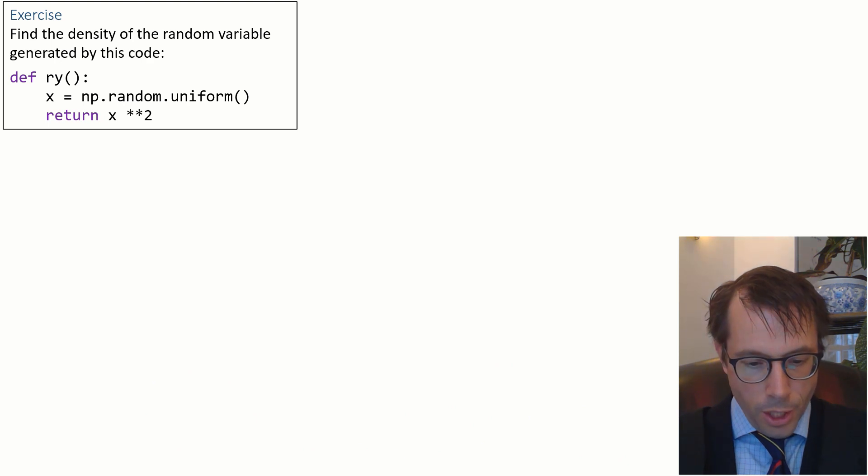Find the density of the random variable generated by this code, def ry(). I'll first of all let x be a uniform random variable, then this function ry returns x squared.